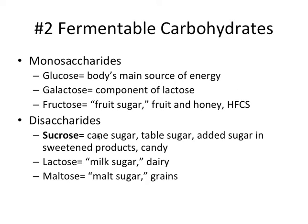We also have disaccharides — they're two simple sugars linked together. Sucrose is glucose and fructose. Lactose is glucose and galactose. And maltose is two glucoses. Now, strep mutans has an enzyme called invertase, which is basically sucrase, which can break down sucrose into its components, glucose and fructose, and then easily process this by glycolysis and fermentation.